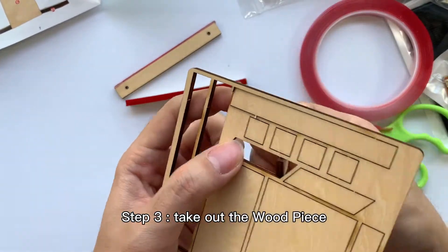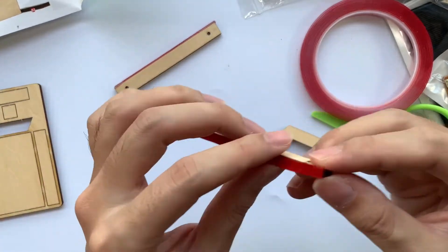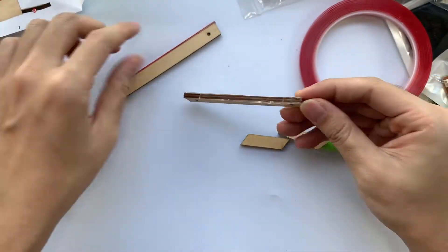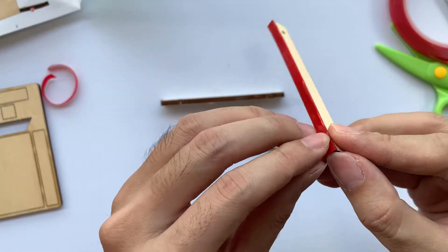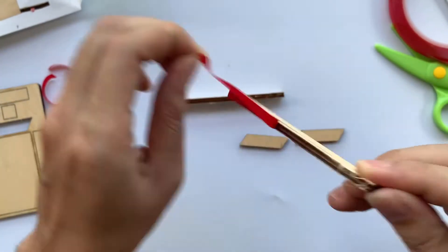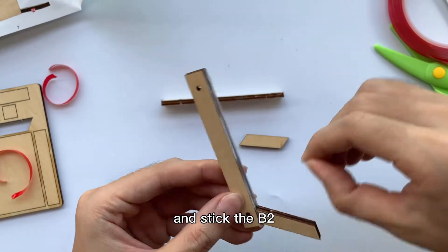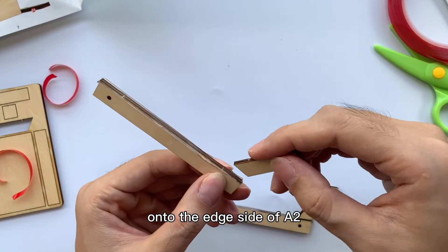Step 3: Take out the wood piece B1 and B2 from the wooden board and peel off the film of the double-sided tape on A1 and A2, and then stick the B1 onto the edge side of A1 and stick the B2 onto the edge side of A2.